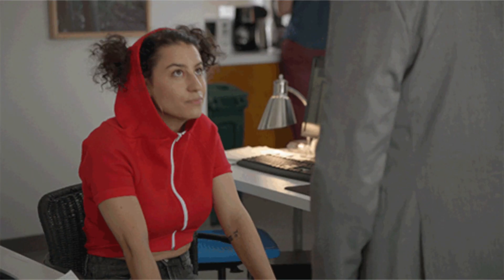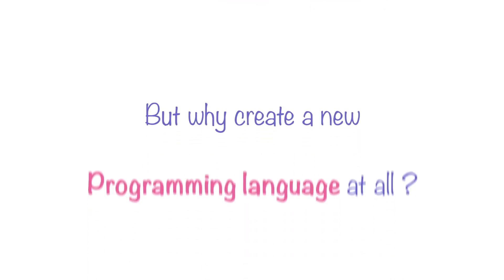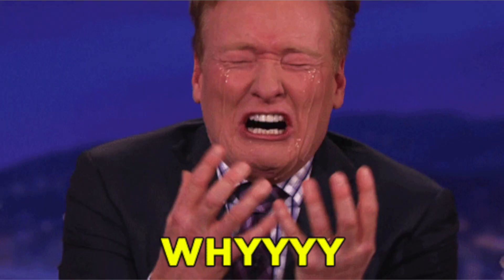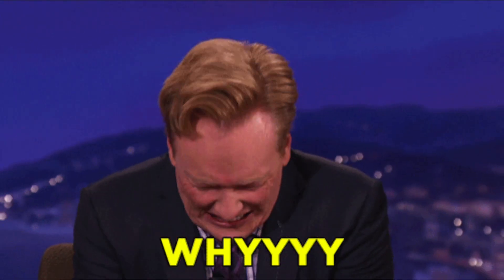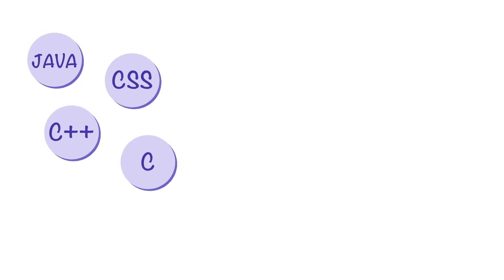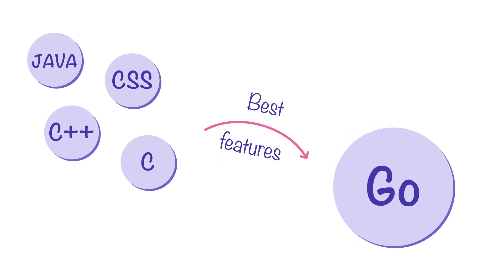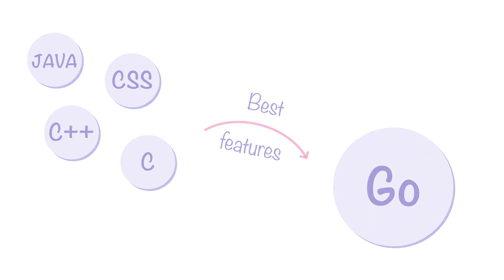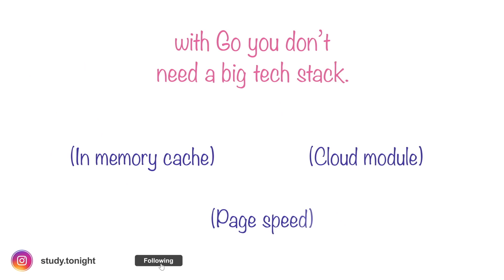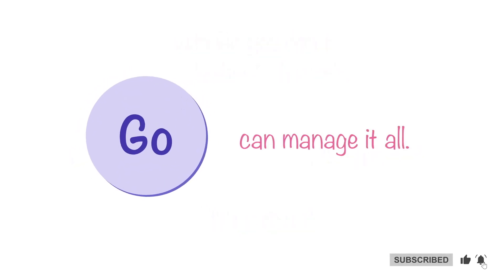This is a very good programming language. But why create a new programming language when there already are so many? The idea behind the development of Go language was to combine the best features of different programming languages and create one programming language which caters to all the modern requirements when it comes to software and application development. Go language comes feature-packed, and you do not need a huge technology stack because Go language alone can manage a lot of things.